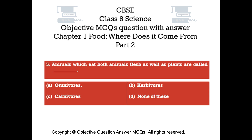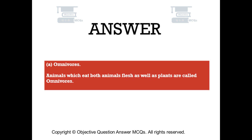Question number 5. Animals which eat both animals' flesh as well as plants are called dash. Option A: Omnivores. Option B: Herbivores. Option C: Carnivores. Option D: None of these. The right answer is Option A. Animals which eat both animals' flesh as well as plants are called omnivores.